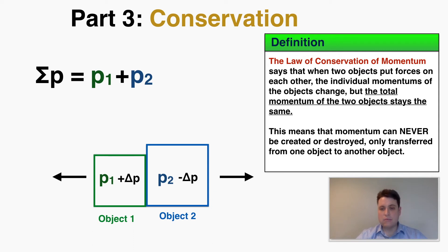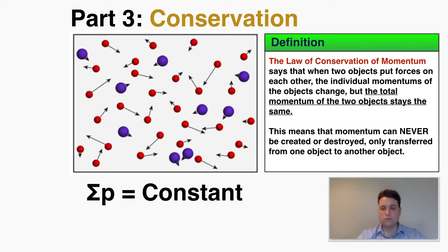The implication of this is that momentum can never possibly be created or destroyed. Momentum can never come into or leave the universe as a whole — it can only be moved around from one object to another. In fact, the total momentum in the universe, if you were to add together every single mass times velocity of every single particle, would be some constant. The momentum can't possibly be gained or lost in any way, which gives us a lot of predictive power.